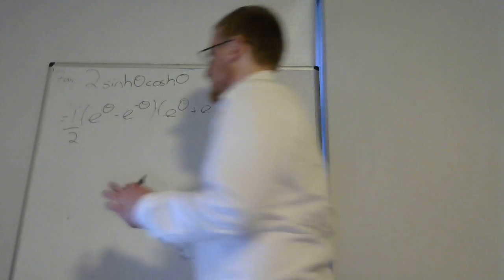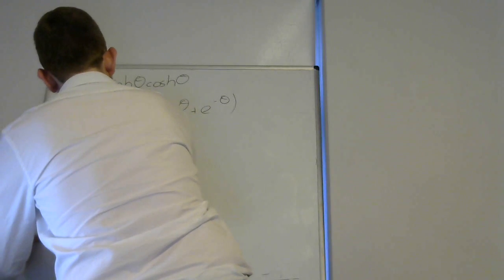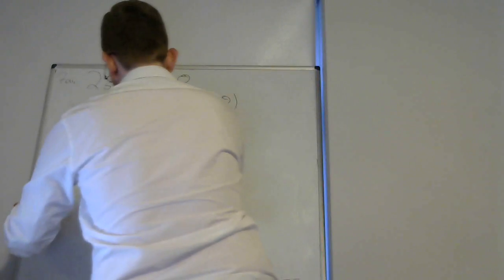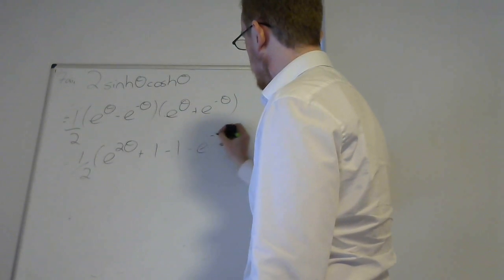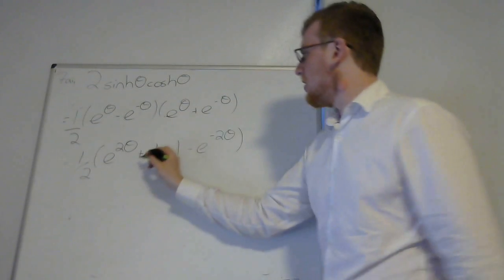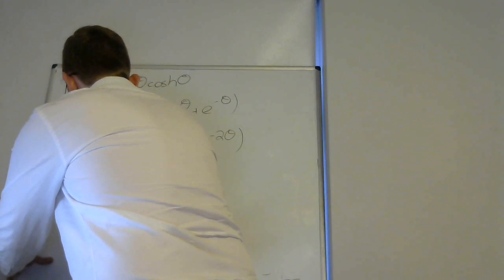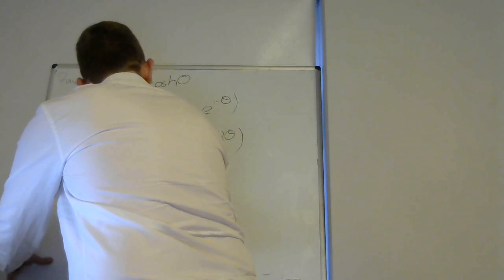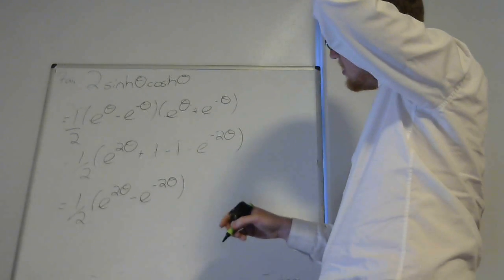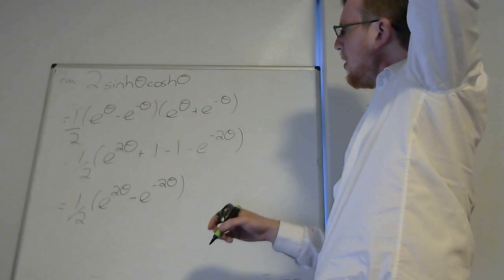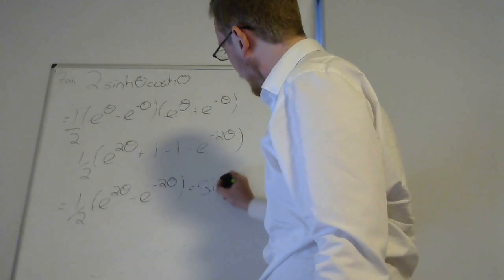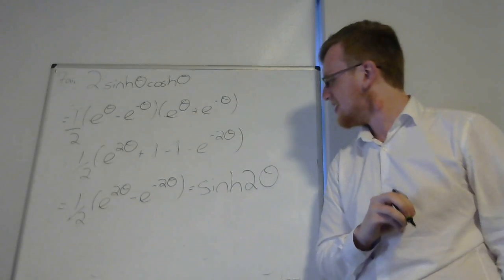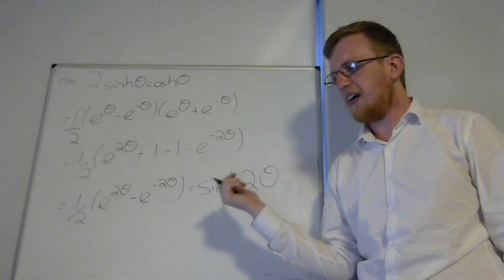So sinh theta is a half e to the theta minus e to the minus theta. Always used to think it was weird that the sinh would have the minus and the cosh would have the plus. Usually you expect the sinh to have the plus, so just remember that. The half from the sinh theta will cancel out with the 2, so we've got e to the theta minus e to the minus theta multiplied by the half from the cosh theta, which is e to the theta plus e to the minus theta.